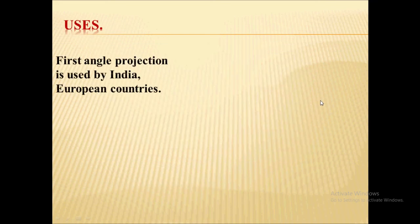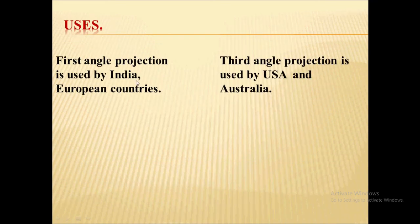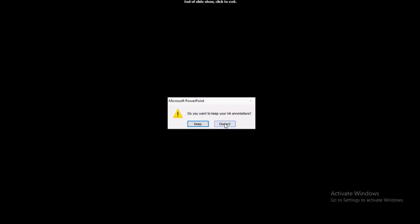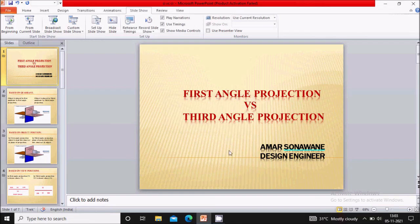Next, depending on the uses: first angle projection is used by India and European countries, while third angle projection is used by USA and Australia. So these are the differences between first angle and third angle projection. Hope you like this video. Thank you for watching.